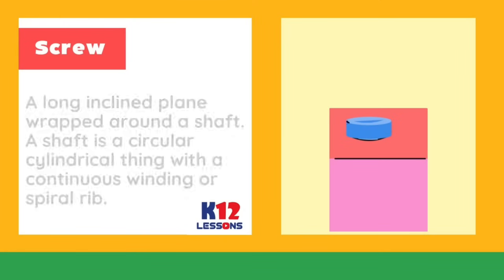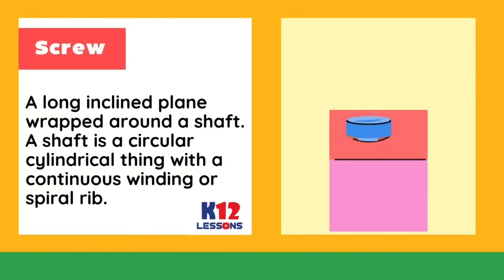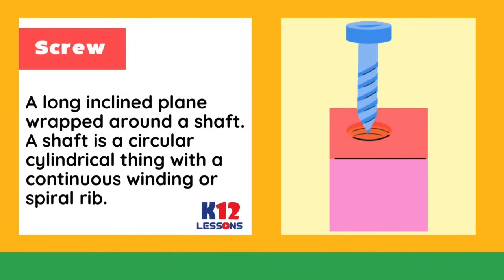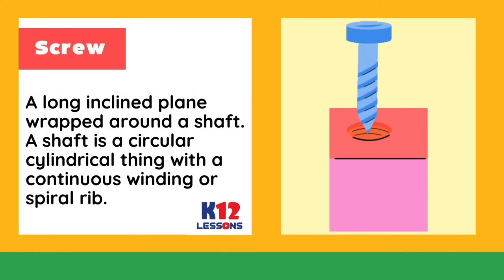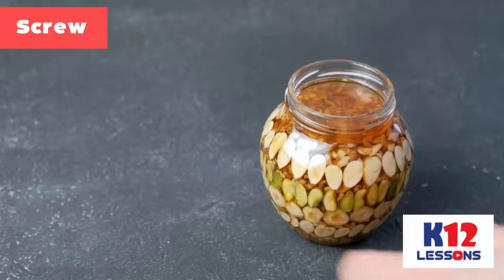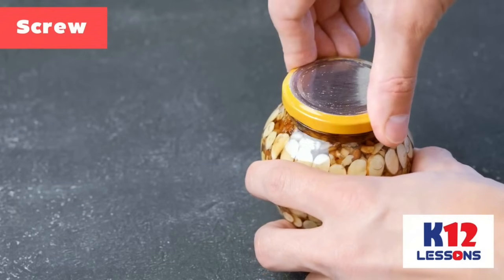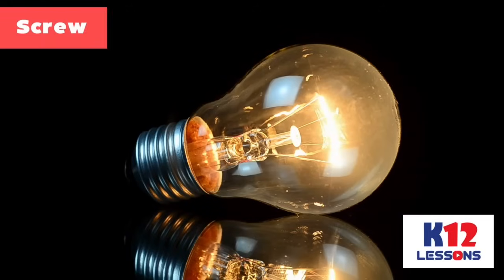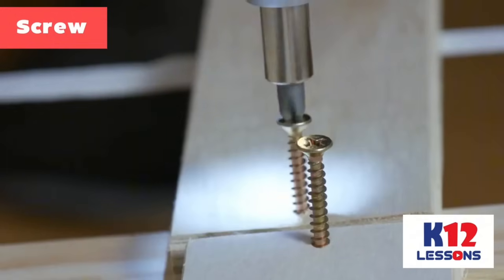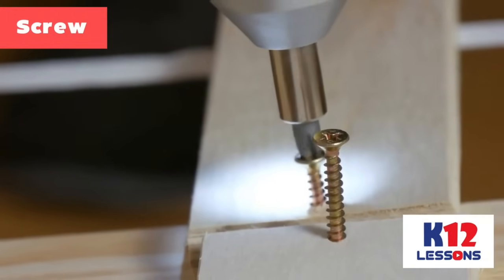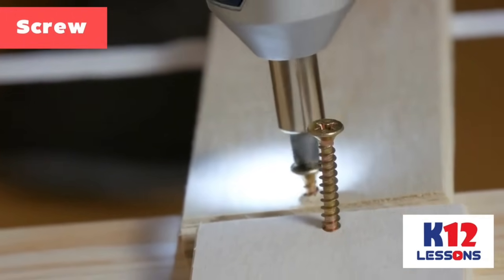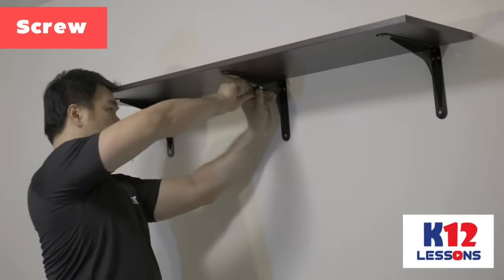Screw: a long inclined plane wrapped around a shaft. The shaft is a circular cylindrical form with a continuous winding or spiral rib. Examples: jar lid, bolt, and the bottom end of a light bulb. Uses: fastens or holds things together and is used to hold or lift objects.